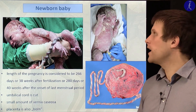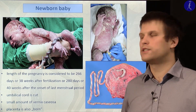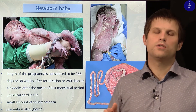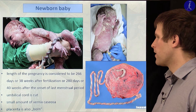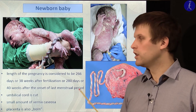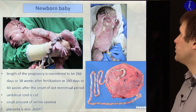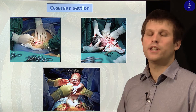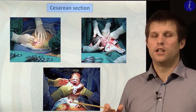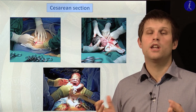The length of pregnancy is considered to be somewhere between 266 and 280 days. Even if the baby is born on the 41st week, it is considered a normal time of birth. After birth, the umbilical cord is cut and the placenta is also born after the baby. A small amount of vernix caseosa can be found on the surface of the newborn. Sometimes a caesarean section is carried out depending on the circumstances — largely determined by the size, length, and form of the pelvis and how the embryo head is positioned in the inlet of the pelvis.